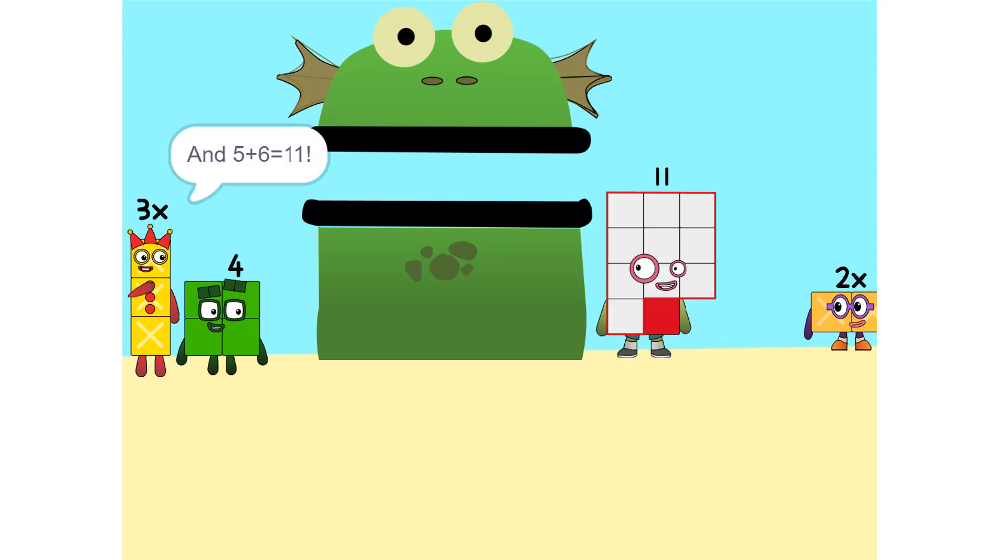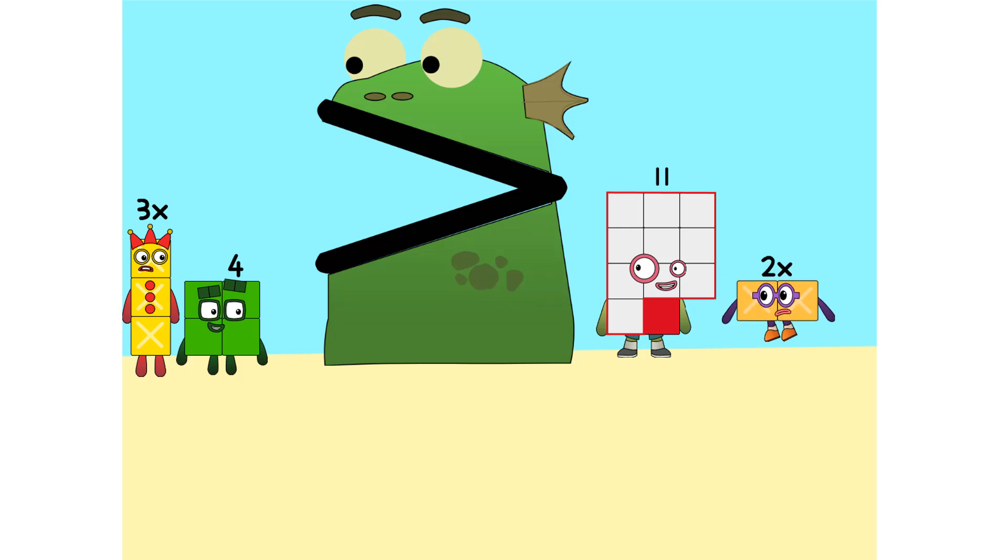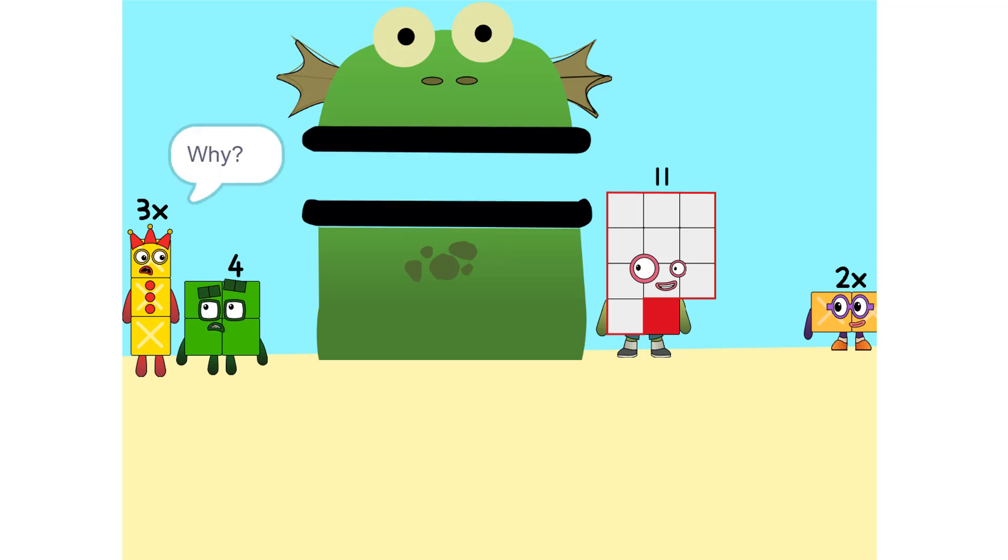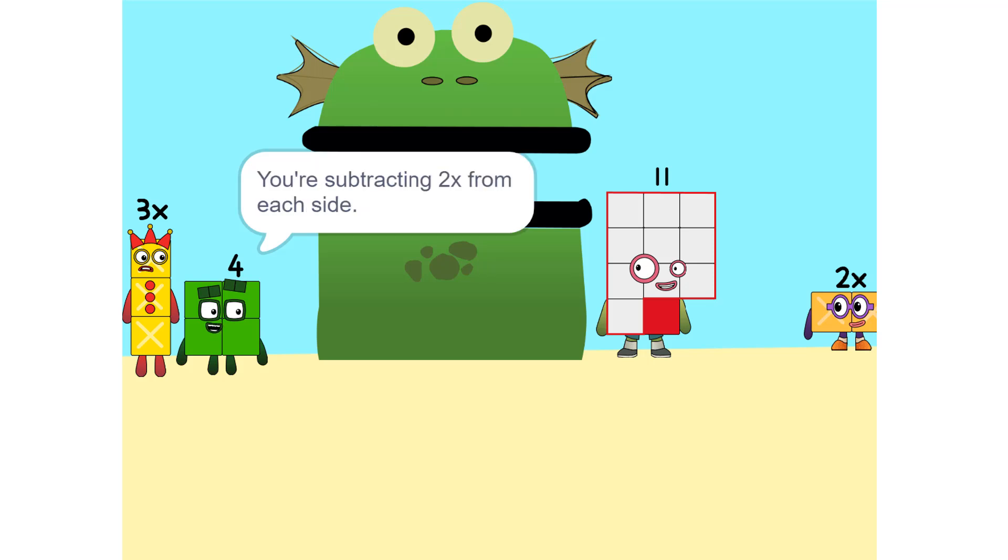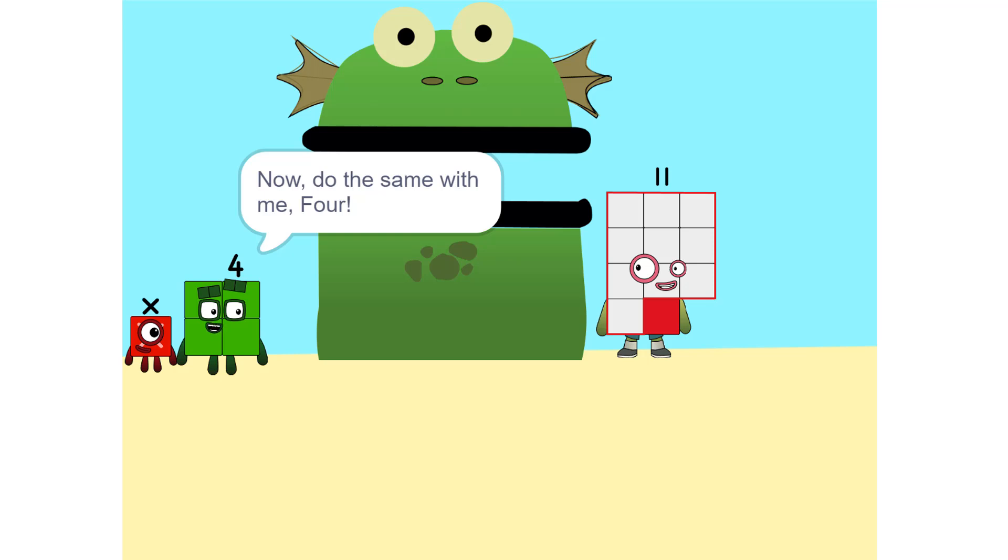And 5X is 11? Yeah. Now we have to move things. We have to move this 2X to this side. Whenever you switch sides, you have to switch its sign. So if it's positive it becomes negative and vice versa. Why? Think of it this way: you're subtracting 2X from each side.